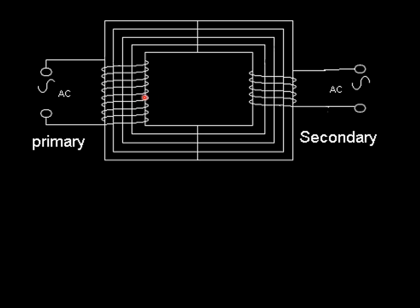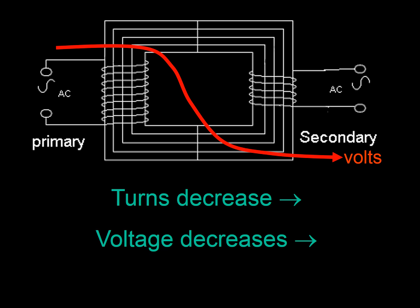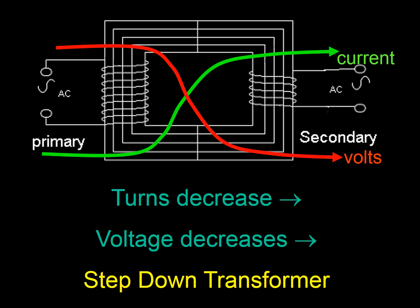This one here, the coils goes down, turns decrease, meaning the voltage decreases, makes it a step down transformer. It means the current goes up though. Voltage down, current up, and of course the power stays the same because it's very efficient and we don't really lose any power.